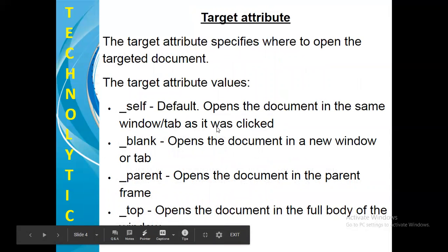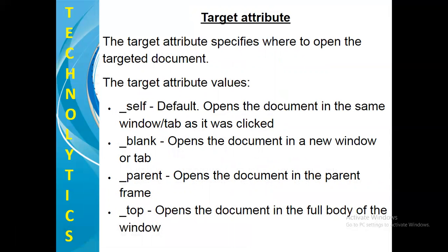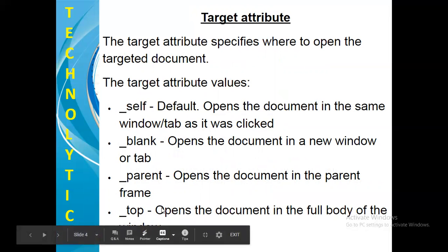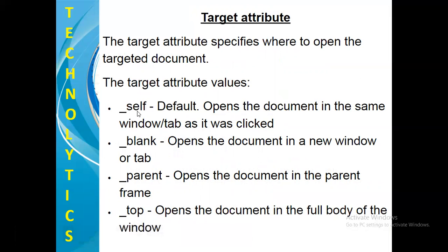The target attribute specifies where to open the targeted document. You have the following target attributes: underscore self, which is the default and opens the document in the same window; underscore blank, which opens the document in a new window or new tab; underscore parent, which opens the document in the parent frame; and underscore top, which opens the document in the full body of the window.